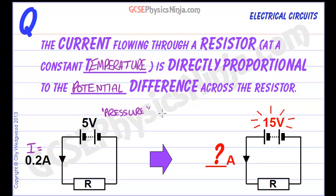But for the moment, remember that the current at a constant temperature is directly proportional to the potential difference across the resistor, the pressure pushing the charge through.